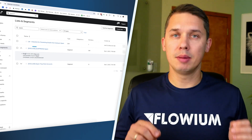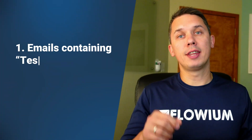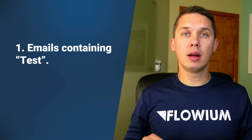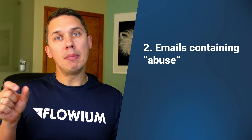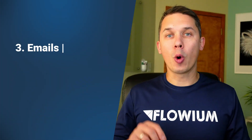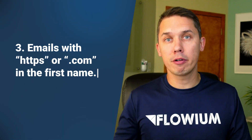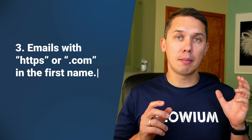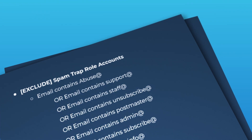The first way is very simple. You are creating a segment with specific criteria. Those criteria might be something like any email that contains 'test' in their email, you will consider as a bot. Or any email that contains 'abuse', you will segment out as a bot. Or any email that has 'HTTP' or '.com' in their first name, you can consider as a bot as well. We have on our website the list of criteria that we use for us and our clients.